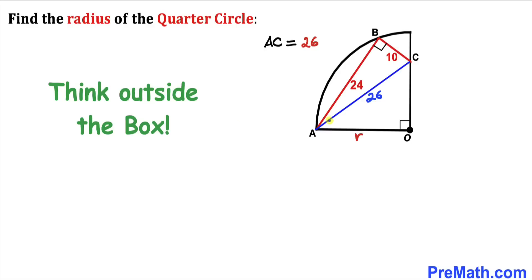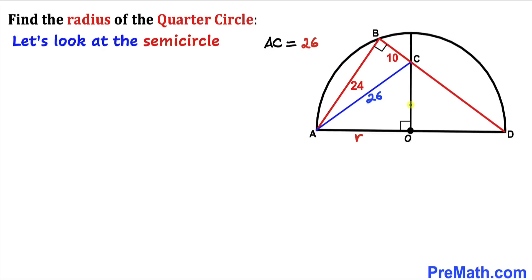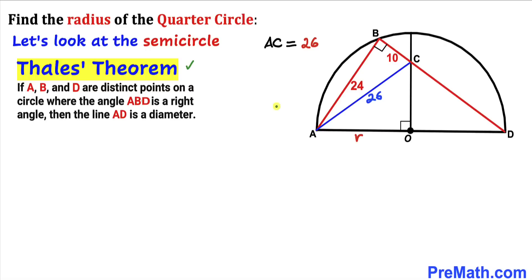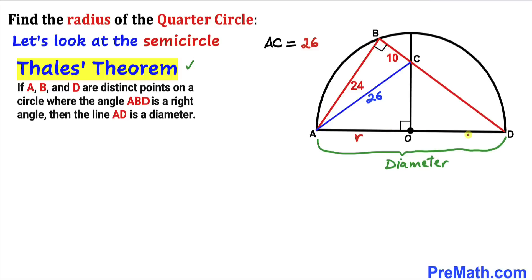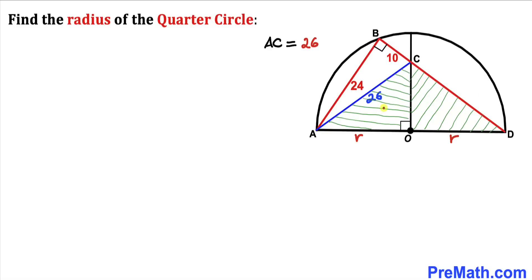Since we are dealing with this challenging problem, we have to be very creative and think outside the box. We are going to consider a semi-circle and recall Thales' theorem. According to this theorem, if points A, B, and D are on a circle where angle ABD is 90 degrees, then line AD is the diameter. If one side is radius r, the other is radius r as well, so diameter AD = 2r.